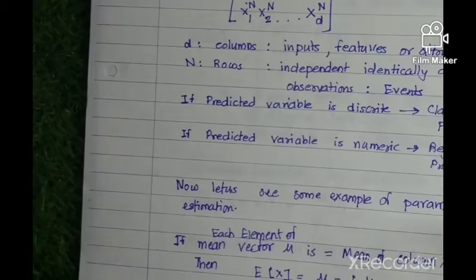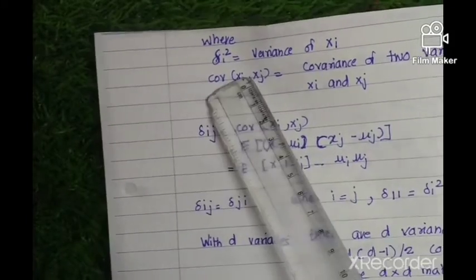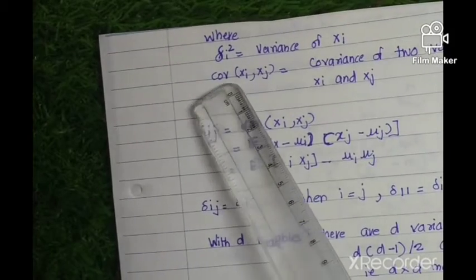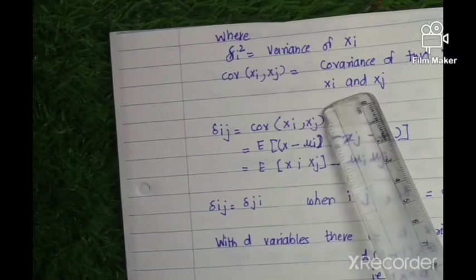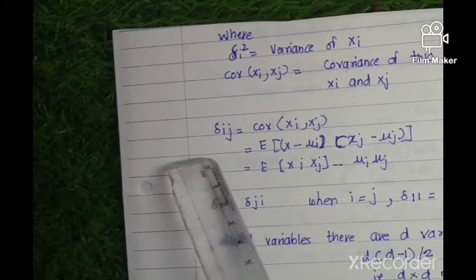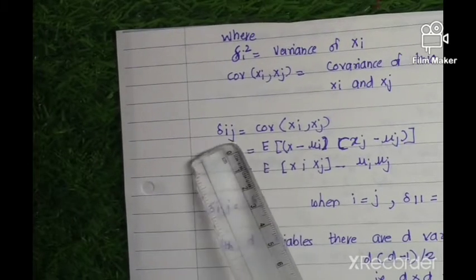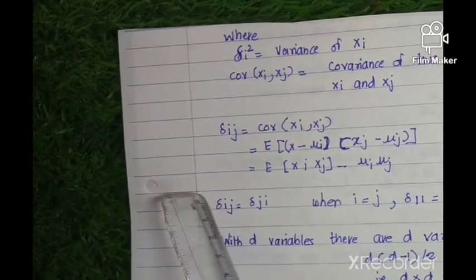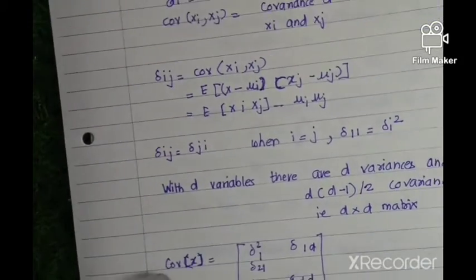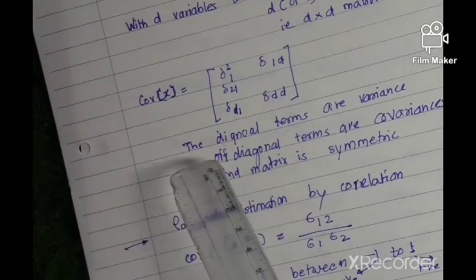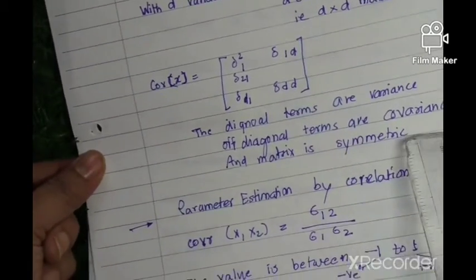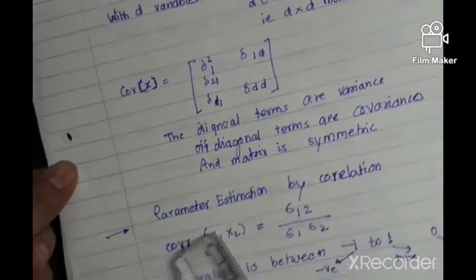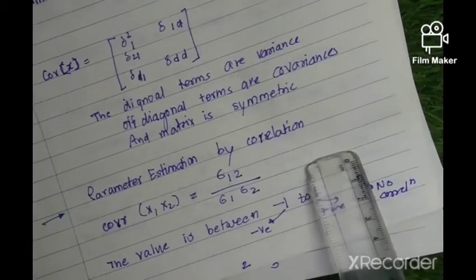For parameter estimation, the variance of x_i can be determined with the help of a covariance matrix involving two variables, x_i and x_j. The covariance of x_{ij} gives a particular expected value. The diagonal terms of the covariance matrix are the variances, and the covariance matrix is called symmetric.